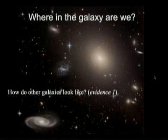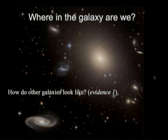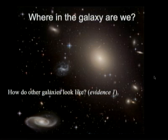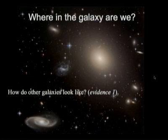For example, we can look at other galaxies out there. There are many other galaxies in the sky. We should be similar to one of those. We see that there are certain types of galaxies. If you look at how other galaxies look, that gives us some clue to what we should look like.